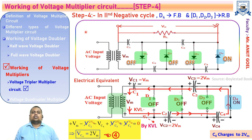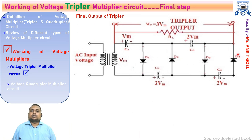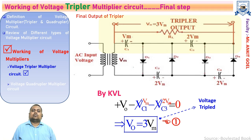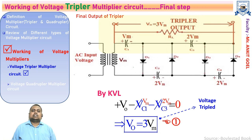Now let's take the output of the voltage multiplier. Since this is the common circuit for both voltage tripler and quadrupler, let's first discuss the output for the voltage tripler multiplier circuit. The tripler output is taken across capacitors C1 and C3. Applying KVL in the highlighted region gives: VO − VC1 − VC3 = 0. Substituting VC1 = VM and VC3 = 2VM gives VO = 3VM. The voltage available at the output is three times the input peak voltage — that is why it is called the voltage tripler multiplier circuit.